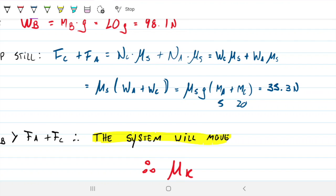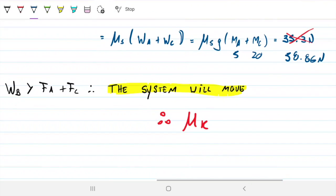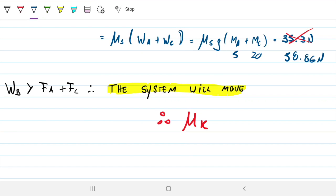So we have 25 times the gravity times the coefficient. So instead of 35, let's actually do this so we can highlight that we're changing this. Instead of 35, this will be 58.86 N. But this is still smaller than the 98 of B. So this still holds true, the system will move. We still need to use our kinematic coefficient as opposed to the static one.